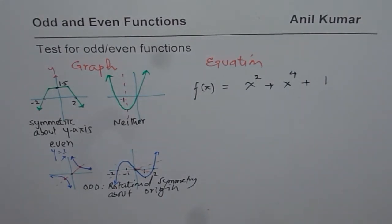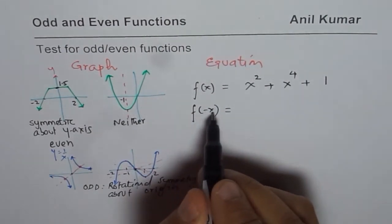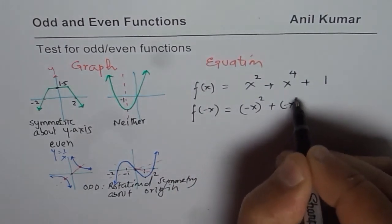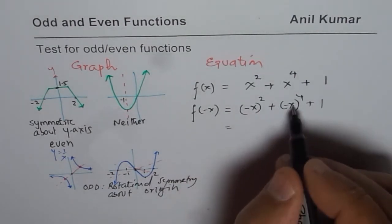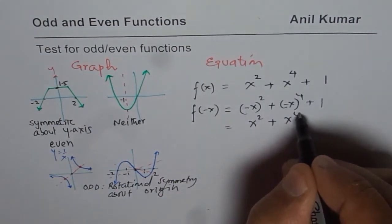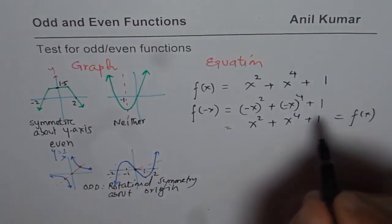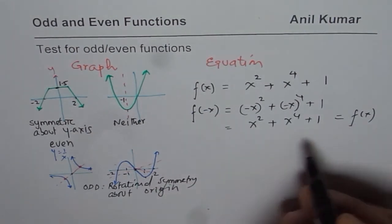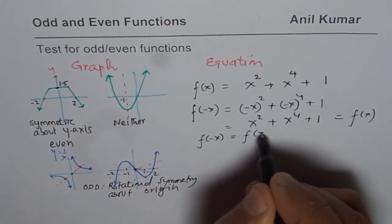The test is to replace x with minus x and find what f of minus x is. When you replace x with minus x, all the even powers make the negative become positive, so you get the same expression. This indeed equals f of x. Since f of minus x equals f of x, the function is an even function.